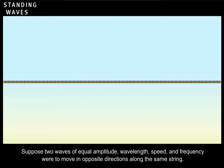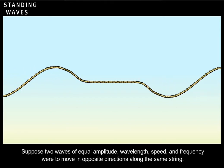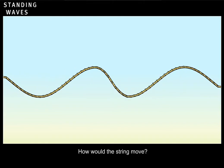Suppose two waves of equal amplitude, wavelength, speed, and frequency were to move in opposite directions along the same string. How would the string move?